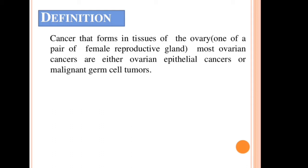Most ovarian cancers are either ovarian epithelial cancers or malignant germ cell tumors. Basically, the abnormal growth of cells is called cancer, so the abnormal growth of cells in your ovary is called ovarian cancer. More often, ovarian cancers are ovarian epithelial cancers or malignant germ cell tumors — we will see this later.